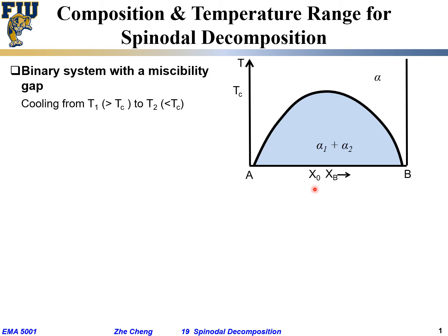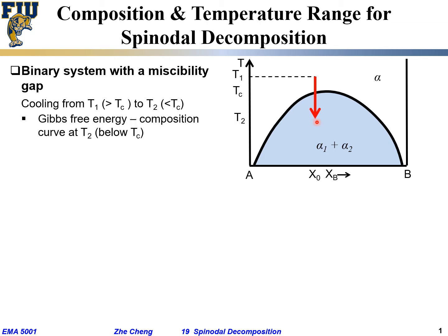For any given system composition x0, if we cool from T1 — a temperature greater than the critical temperature at the top of the miscibility gap — down to T2, which is below the miscibility gap, then for our composition x0 we cool from T1 above the miscibility gap to T2 below it. If we cool very slowly, the system goes from single phase to two phases: alpha 1 plus alpha 2.